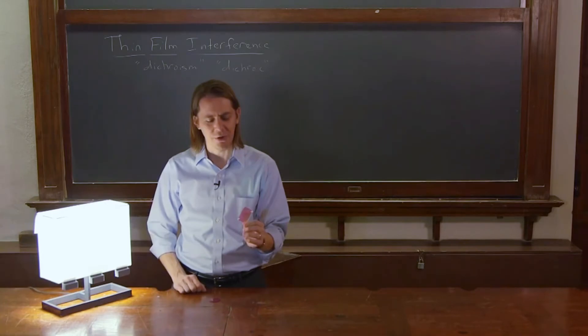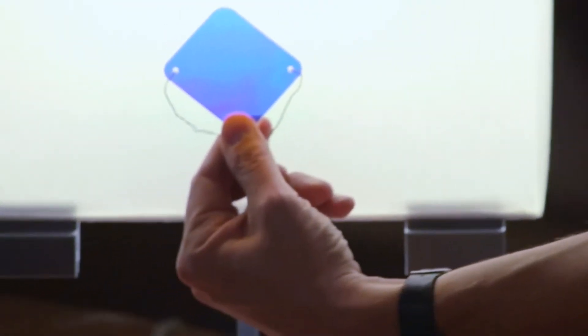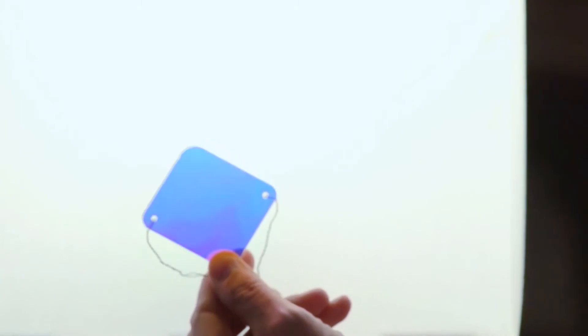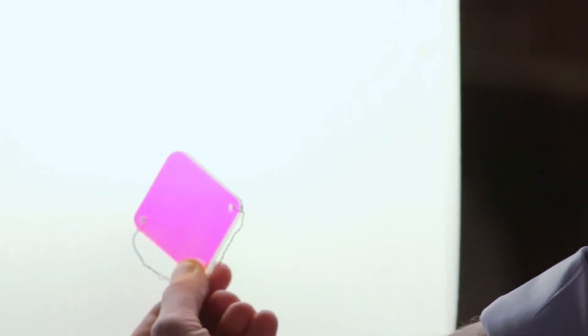She makes art based on sort of physics-y effects or she uses materials and interesting optical effects in her art. And she had an installation here called Unwoven Light which used thousands of these dichroic panels. So they're based on thin film interference and you can see here if we look at it, it's one color. And as you turn it, it changes color. So that way you can see the color go through all different colors as the angle changes.